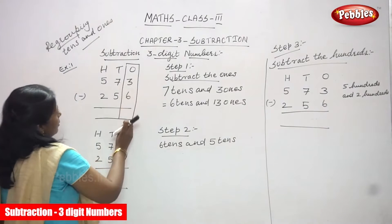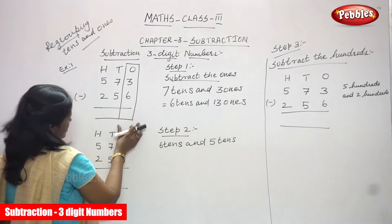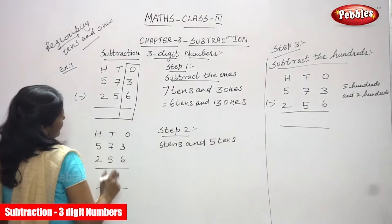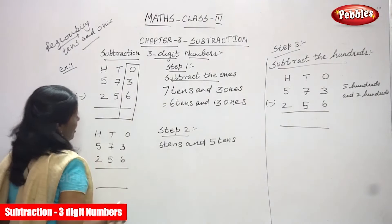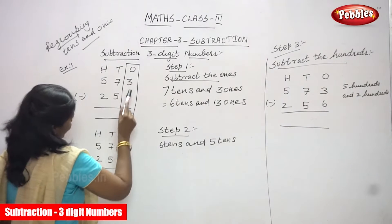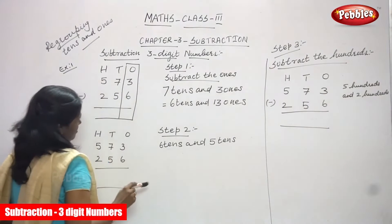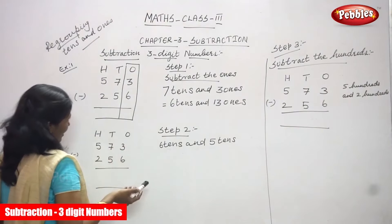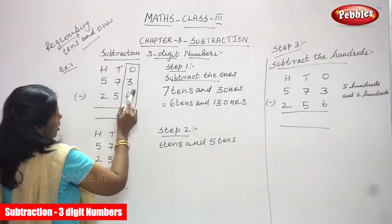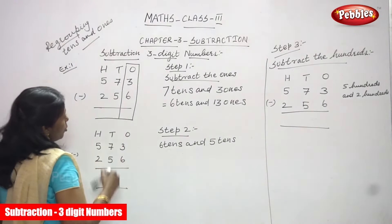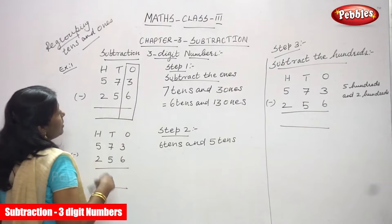I have to start with ones. Look at the numbers in the ones place: 3 and 6. So, 3 is a smaller number and 6 is a greater number — you can't subtract. Not enough ones, because ones is not enough to subtract. So what we are going to do? We have to regroup.